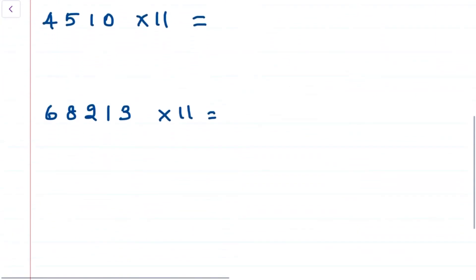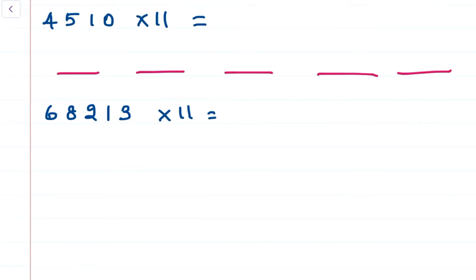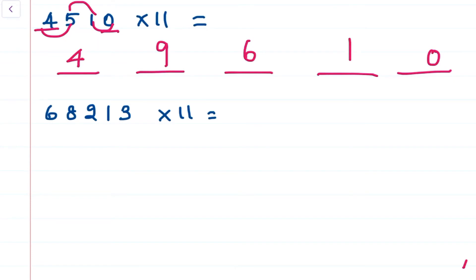Next is 4510 into 11. Here we have a four-digit number so we mark five parts. Our first part answer is the first number, the last part answer is the last number, and the middle parts are consecutive additions: 4 plus 5 is 9, 5 plus 1 is 6, and 1 plus 0 is 1. So our answer is 49610.